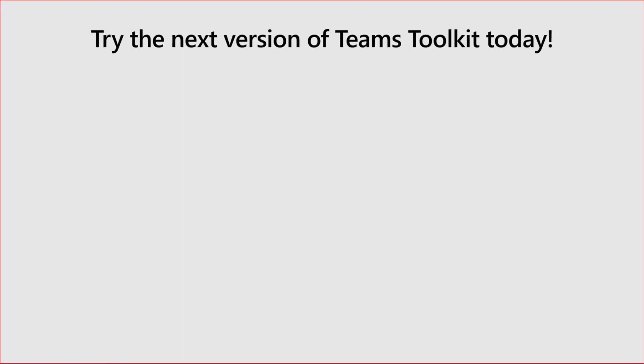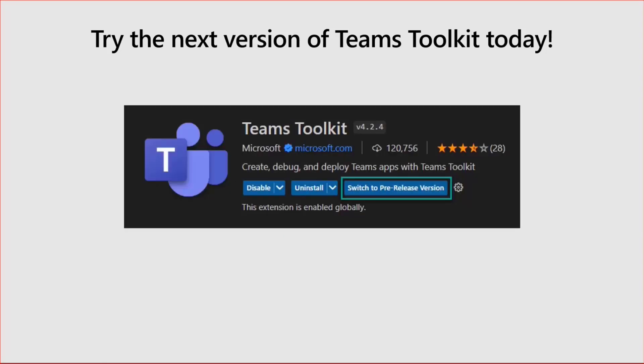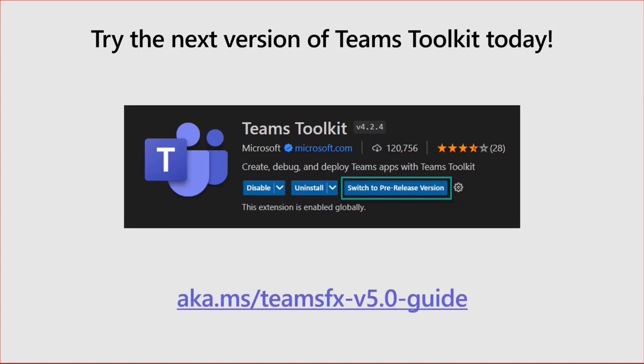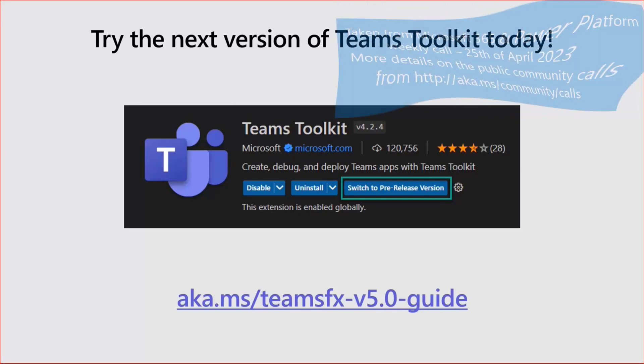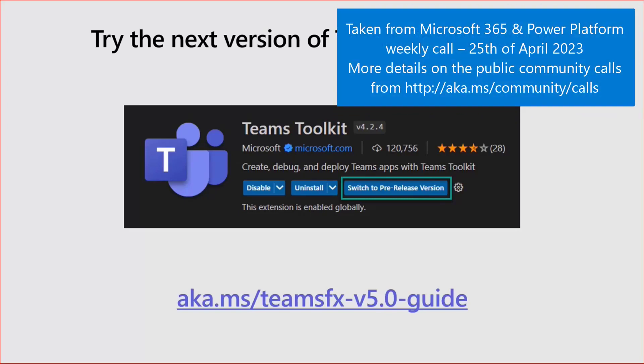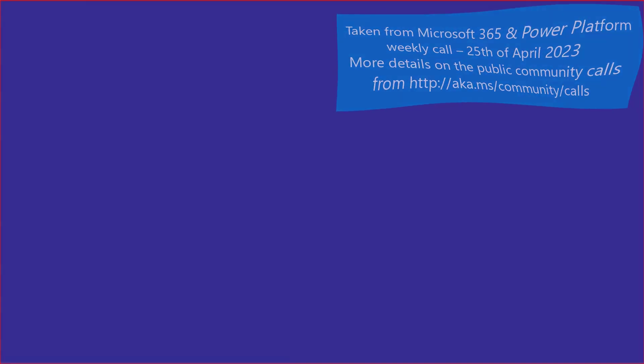All of this is available for you today. You can try the next version of Teams Toolkit — just click 'Switch to pre-release version' in Visual Studio Code in the marketplace if you've already got it installed. And if you want to check out the guide for more details on V5 and what is coming, go to aka.ms/teamsfx-v5.0-guide. And with that, thank you.